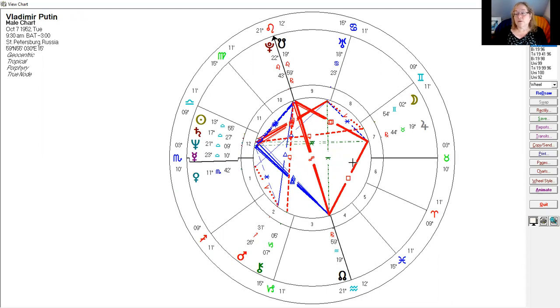As we look at Putin's chart, we can see that his rising sign is Scorpio. He has many planets in Libra. They're all in the 12th house. That Libra energy can be very charming. There's a duplicity about Libra, about air signs, because air is about relating.